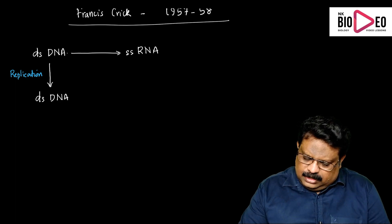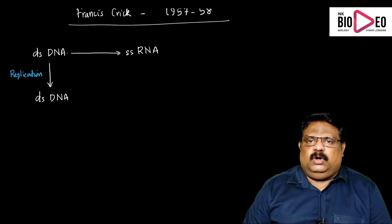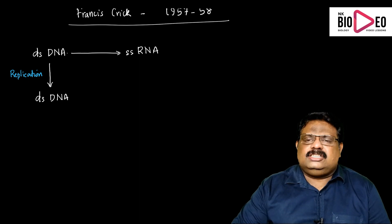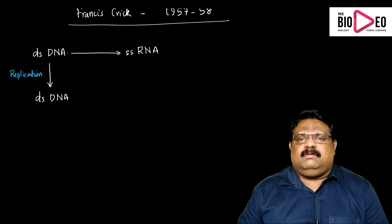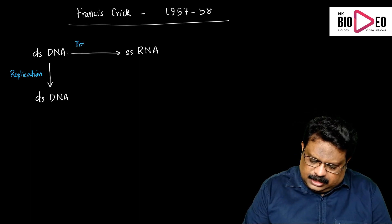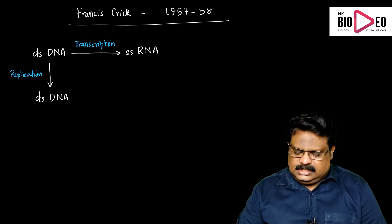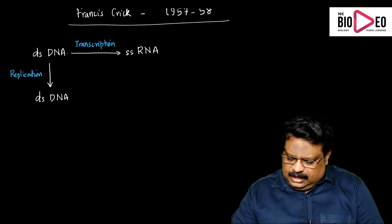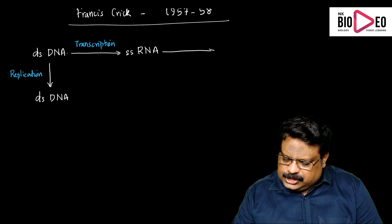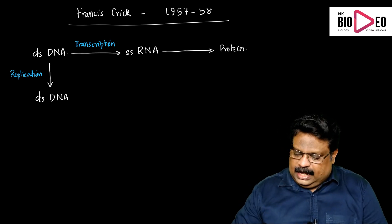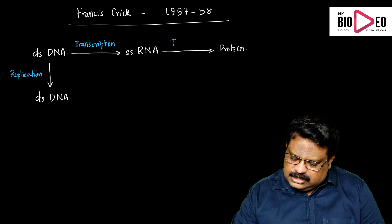In the case of RNA synthesis from a DNA molecule, the script which is present — the document present in the DNA — is transferred into RNA. The transfer of script takes place, so the process is called transcription. Transferring of script from DNA to RNA is called transcription. Then the RNA molecule transfers this information to protein molecules by another process, which is called translation.